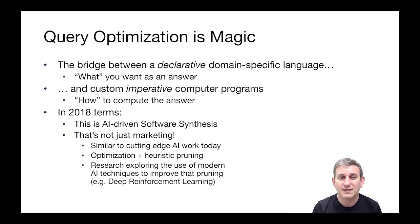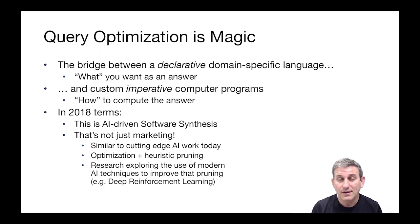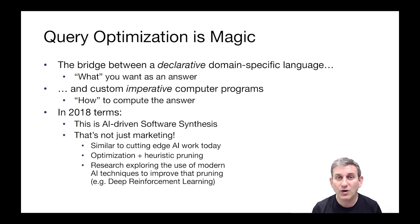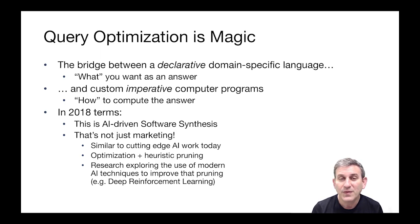Cutting-edge AI today is doing things very similar to what query optimization does, just for different contexts — query optimization is a version of this problem that came up a long time ago. In AI-driven software synthesis, essentially what you're doing is trying to optimize some function using heuristic pruning to choose, in a large search space, the best program for a particular specification. In most cutting-edge AI software synthesis, you're working with a domain-specific language of one sort or another.